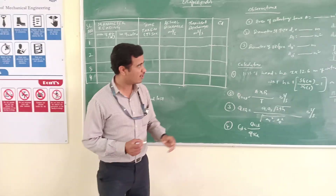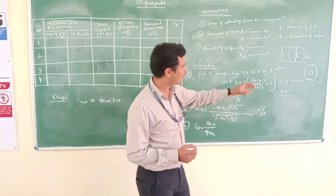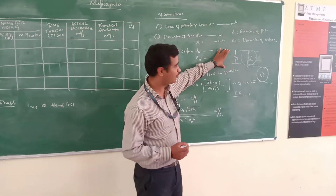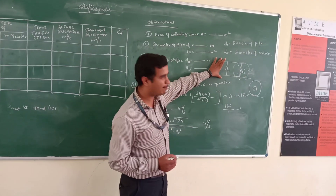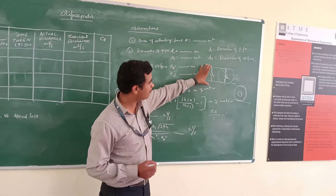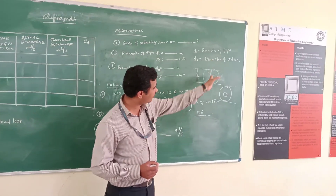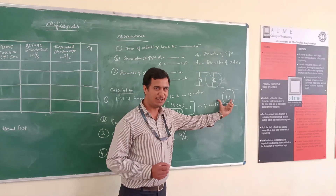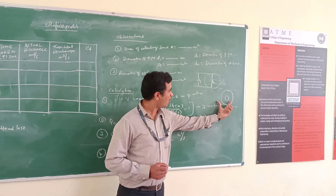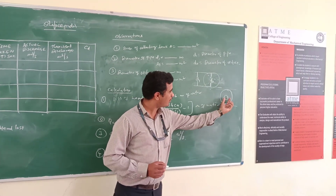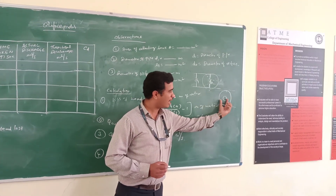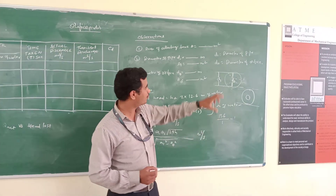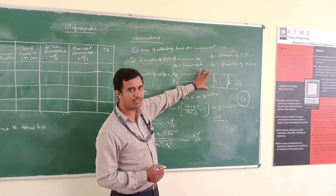In this measuring device, first we have the construction. We will take a pipe. In that pipe, we make a section. In that section, we will place the orifice meter. In the orifice meter, we have a smaller diameter. That diameter will vary as 0.5 of the D1 diameter.